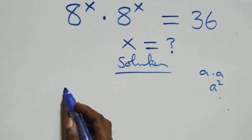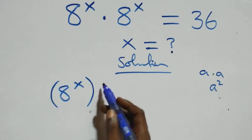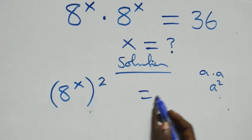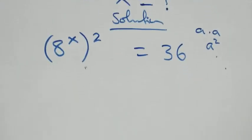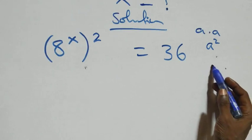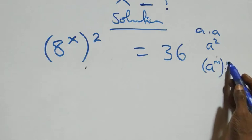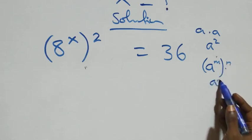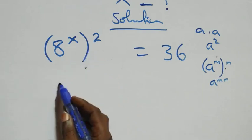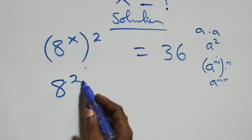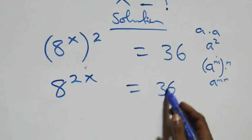So this becomes 8 raised to power x-squared equals 36. This follows from the rule that a raised to power m raised to power n is the same as a raised to power mn. So the power multiplies and we have 8 raised to power 2x equals 36.